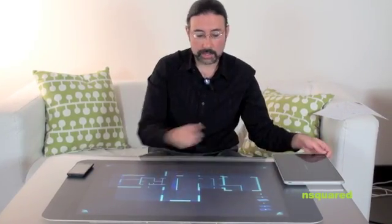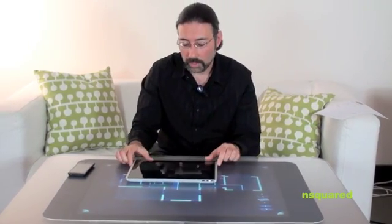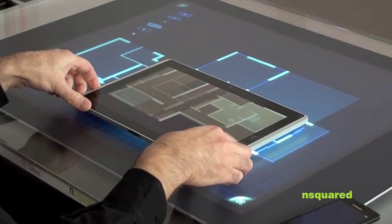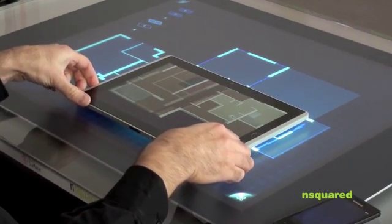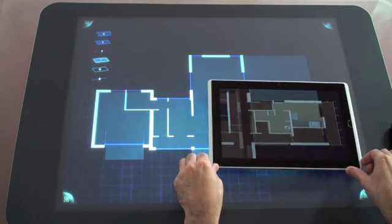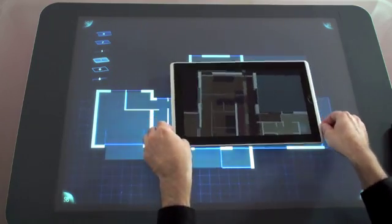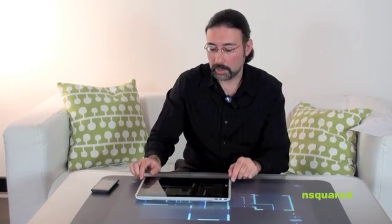I'm going to take my tablet PC device and put it down on the table and you'll see that it renders a different view of that same information. Now in the tablet PC we have a view showing the furnishings whereas on the table we still have the base blueprint.